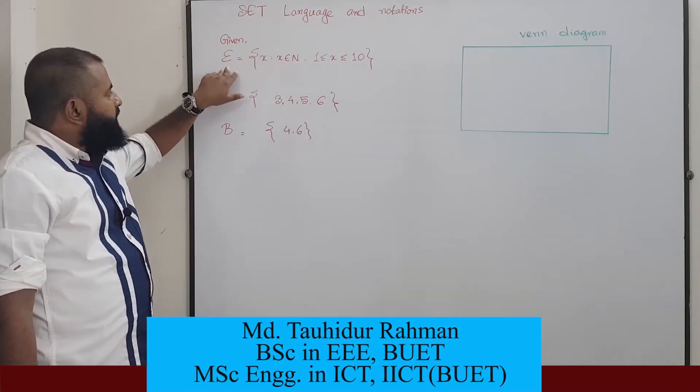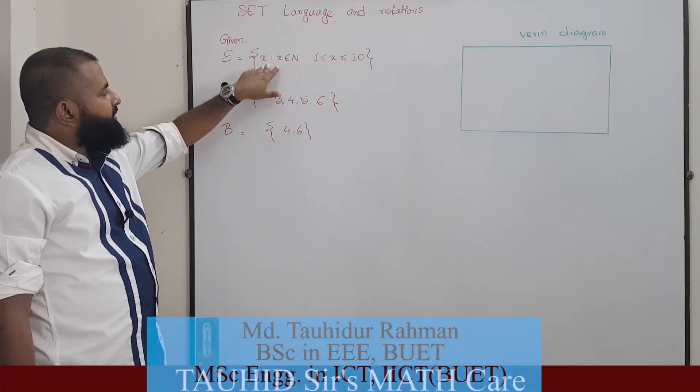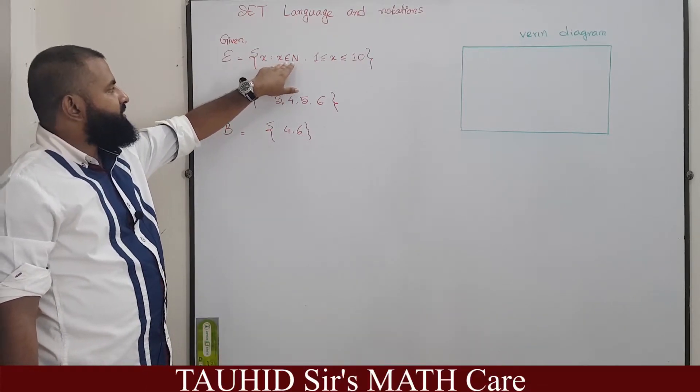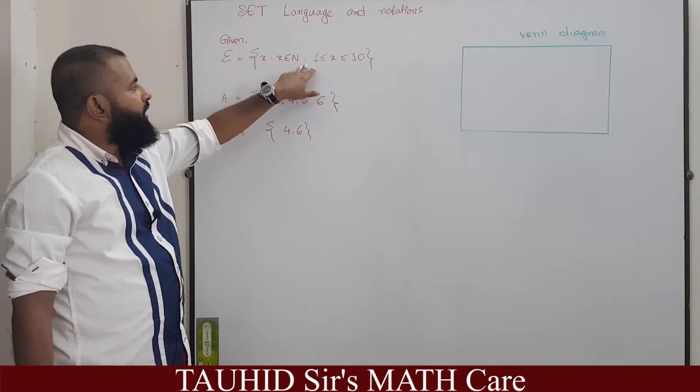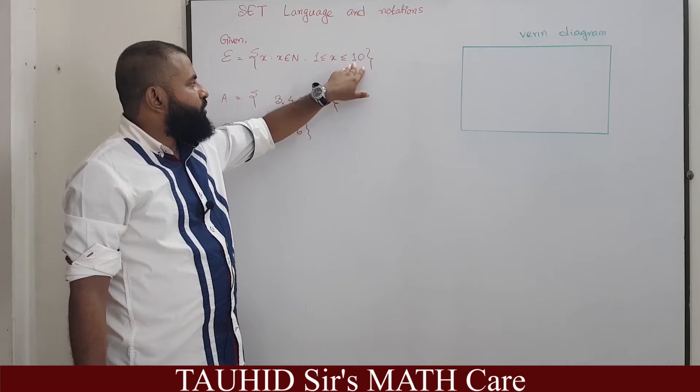Here you see an example given that epsilon equals to x such that x belongs to N, 1 is less than or equal to x less than or equal to 10.